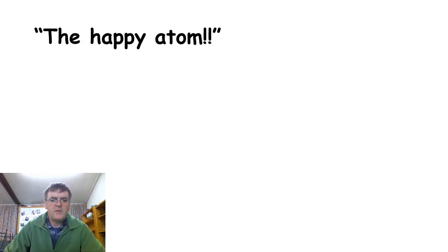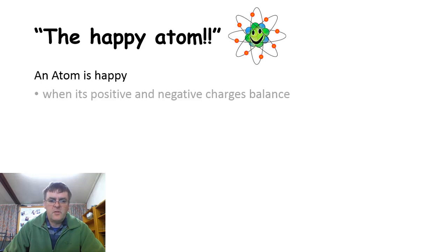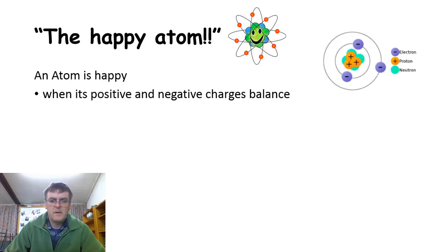So a happy atom is happy when its positive and negative charges balance. So in that previous one, we had the calcium one there, which had the positive protons balanced by the negative electrons, 20 of each, all happy. So the same number of positive charges in the nucleus as there are negatives around the outside.